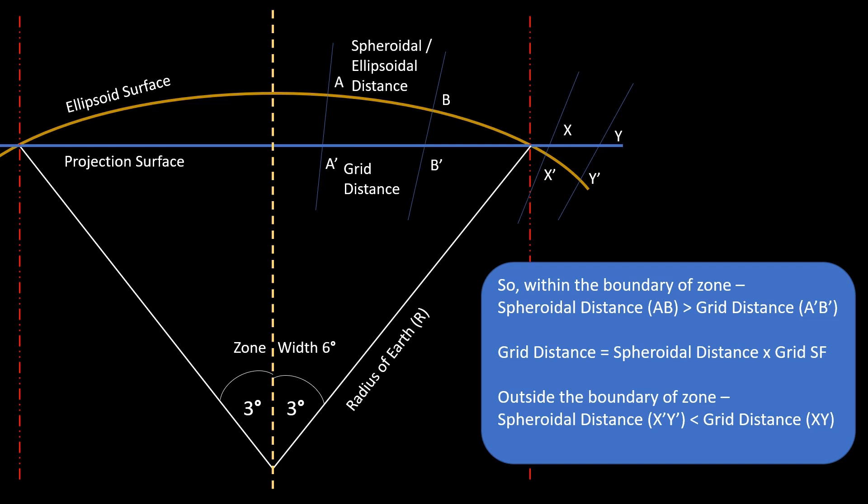But if we go outside of the zone, then the grid distance will be greater. This is because of the scale factor that we have applied to the spheroid to convert the 3D shape into a 2D surface.